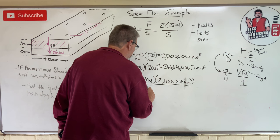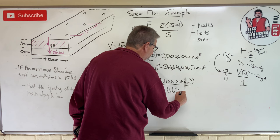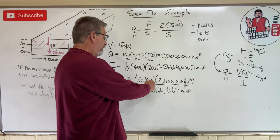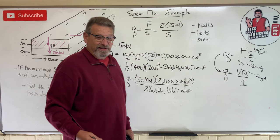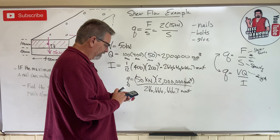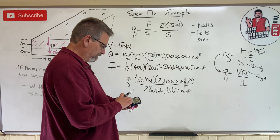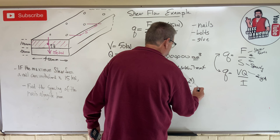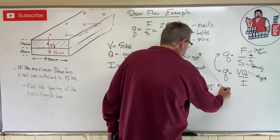Divided by this big rascal here, 266,666,666.7 millimeters to the fourth, and three of those go away there, and that's going to leave me with kilonewtons over millimeters, which is a force over length, which is what we want. How much is that? 50 times 2 million divided by that equals 0.375. And that is kilonewtons per millimeter.